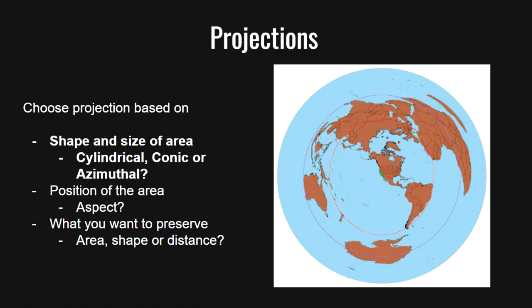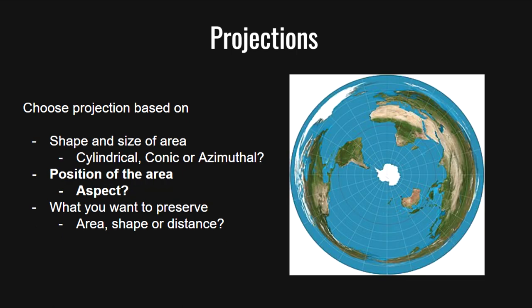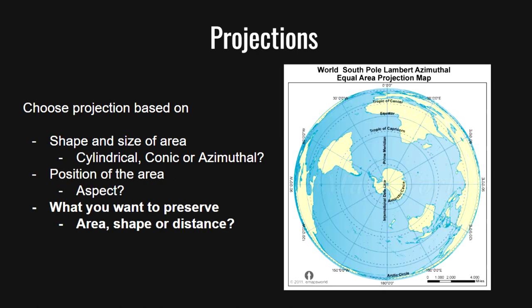For this projection, we want to use an azimuthal projection because we're focused on a polar area, not the extent of the entire world or even a mid-latitude region. For the aspect of the projection, considering that we are in Antarctica, we would want to focus the projection around the South Pole to capture Antarctica. Finally, we would want to preserve area because we are most interested in the spatial extent, or area covered by glaciers in Antarctica. Therefore, we should choose a South Pole azimuthal equal area projection.